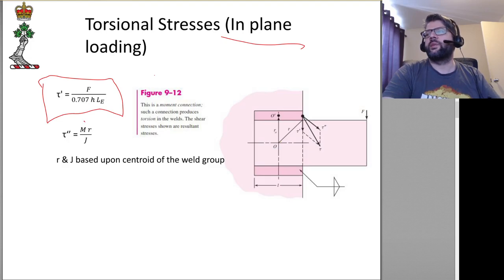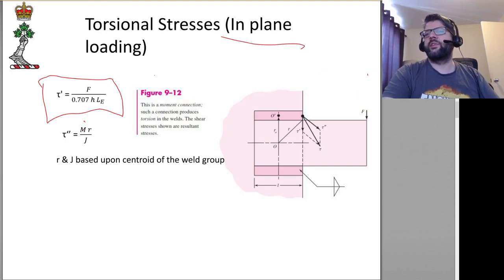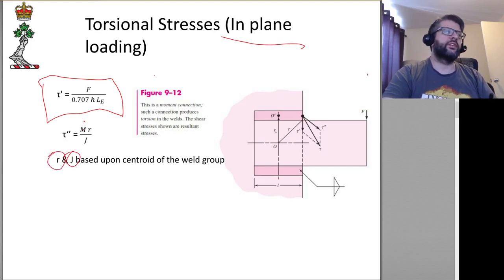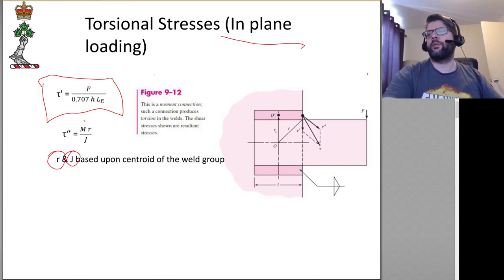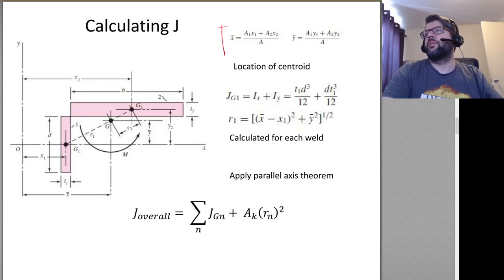We're going to have some sort of moment. That moment is going to be equal to the force applied times the distance between the force applied and the centroid of the weld group. So the moment calculation is done based upon the centroid of the weld group. J is done based upon the centroid of the weld group. R is done based upon the centroid of the weld group. So R is fairly simple, and J is obviously a bit more complicated. We first need to calculate the centroids.